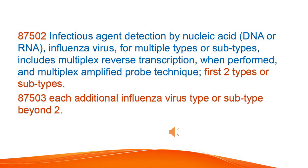Infectious agent detection by nucleic acid (DNA or RNA): influenza virus, for multiple types or subtypes — includes multiplex reverse transcription when performed, and multiplex amplified probe technique; first two types or subtypes. Each additional influenza virus type or subtype beyond two.